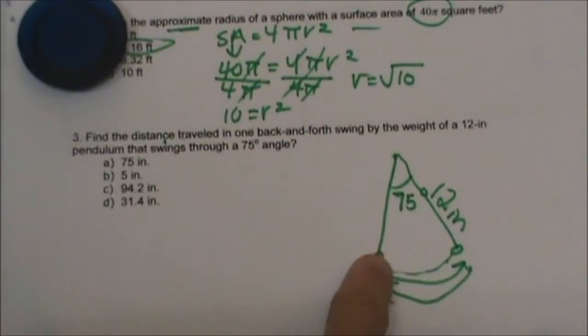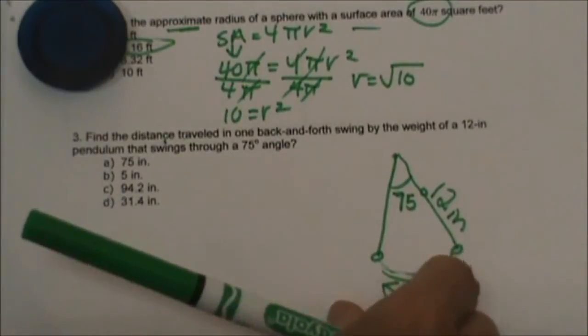But the trick on this one is we are not finding it in one direction, but we are finding it over and back. So whatever we get we are going to double.